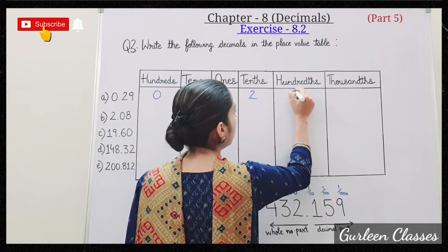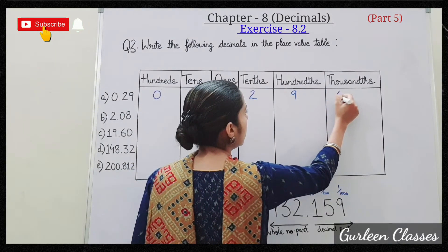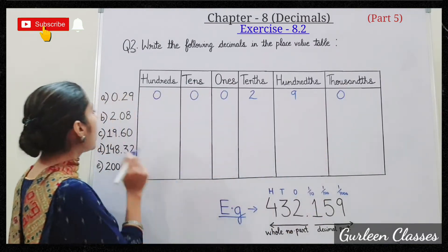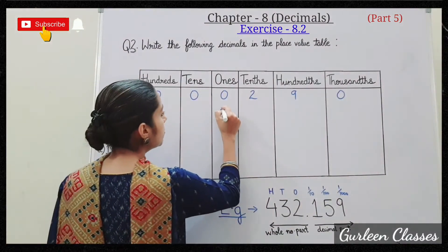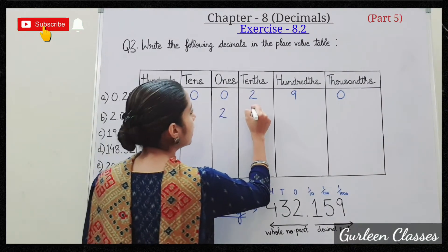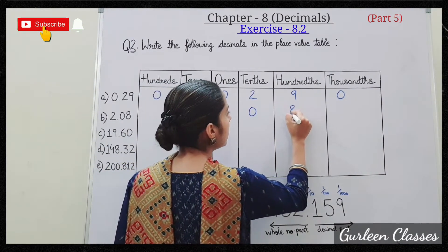Hundredths place we have 9 and thousandths place will be 0. B: 2.08. So 2 is at ones place, 0 is at tenths place, 8 is at hundredths place.